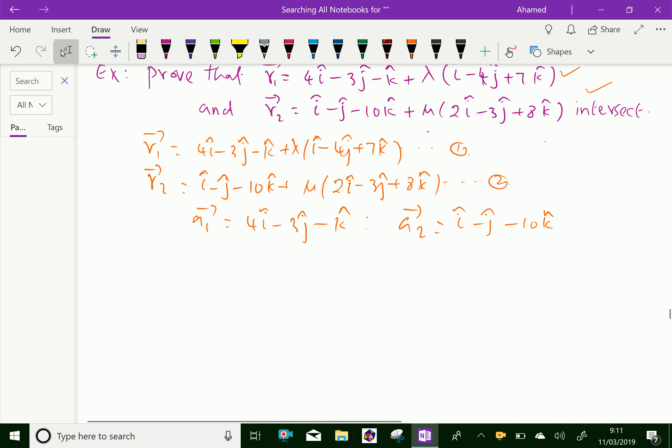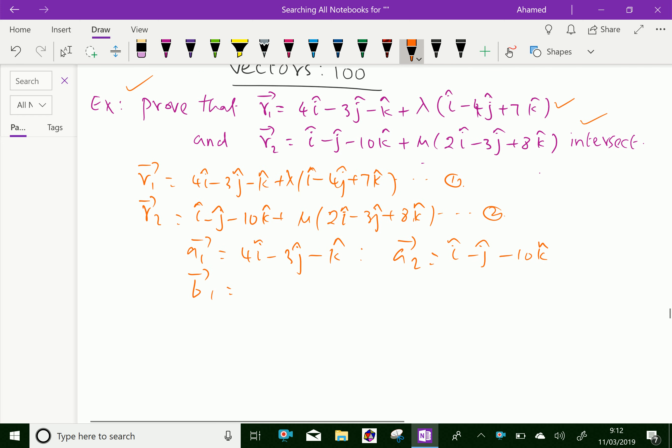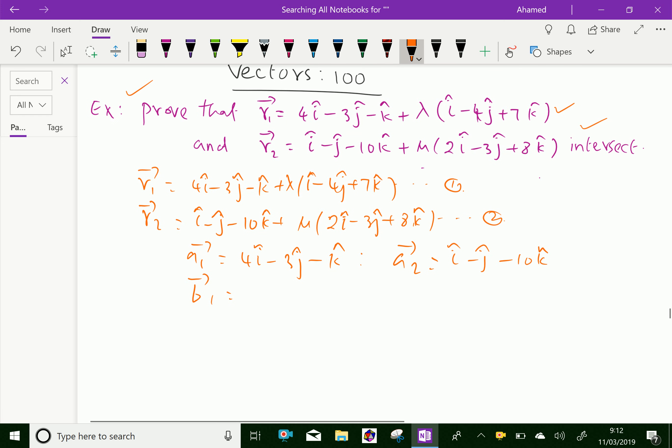The parallel vector b1 equal is i minus 4j plus 7k, then b2 vector equal 2i minus 3j plus 8k.